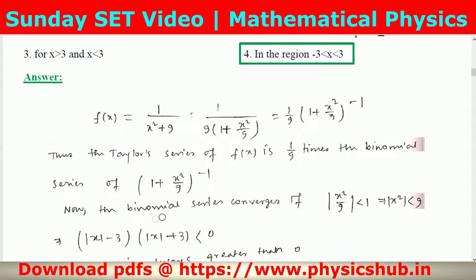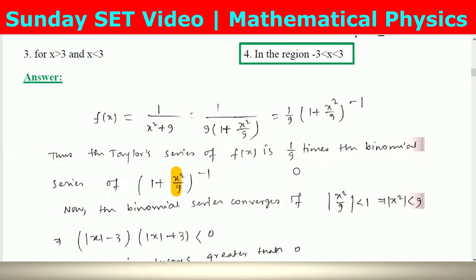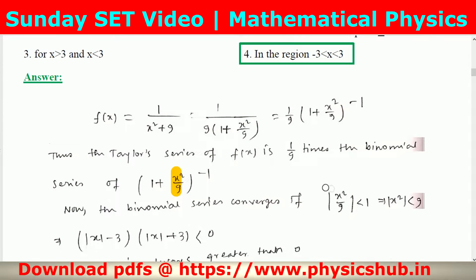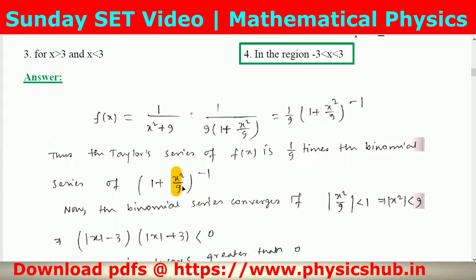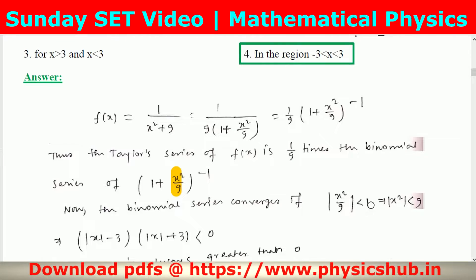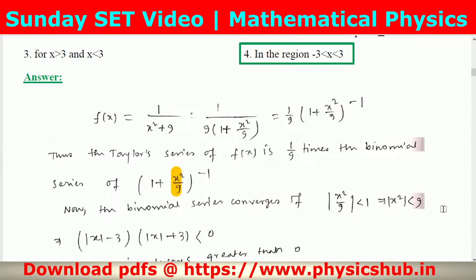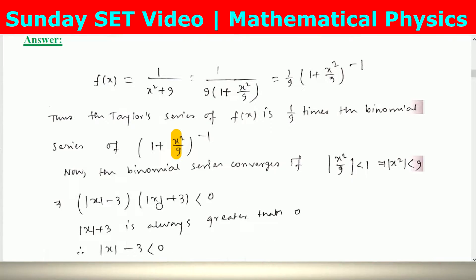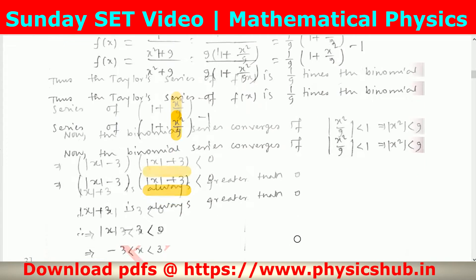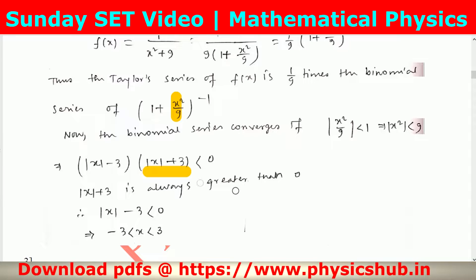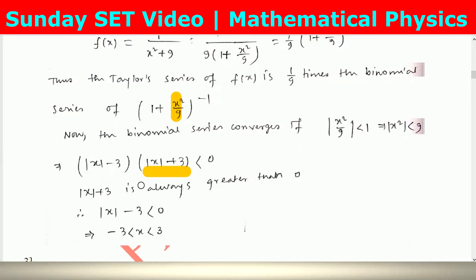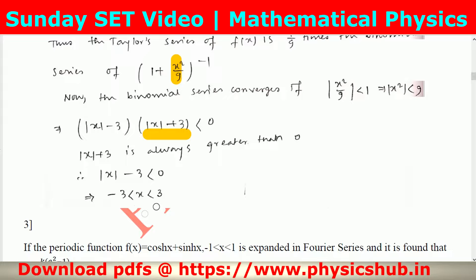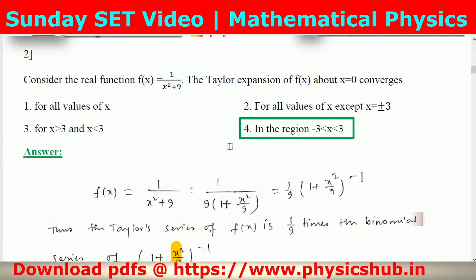The binomial series (1+x)⁻¹ converges when |x| < 1. Here, in place of x we have x²/9, so |x²/9| < 1, meaning |x²| < 9. This gives |x−3|·|x+3| < 0. Since |x+3| is always greater than 0, we need |x−3| < 0, which yields −3 < x < 3. This matches option 4, so option 4 is the correct option.